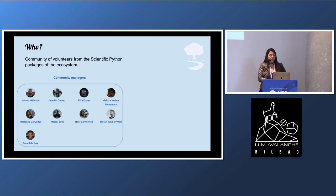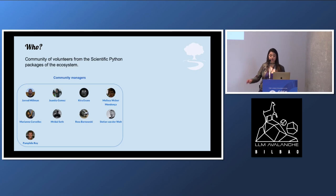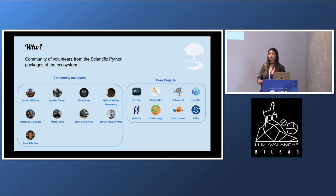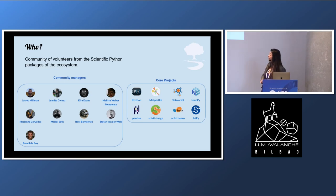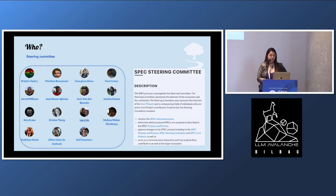The Scientific Python project is composed of a community of volunteers mostly from the Scientific Python packages of the ecosystem. We have developers from NumPy, SciPy, Matplotlib, and Pandas that are part of our community. Some of them are part of the SPEC steering committee, which is currently working on writing and proposing the SPECs. These are the core projects that we are currently working with — that doesn't mean we can't include more, it's just what we're starting off with for our current work.